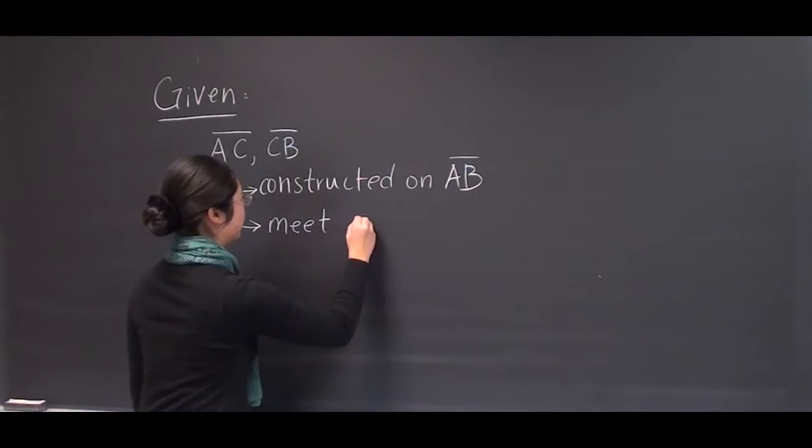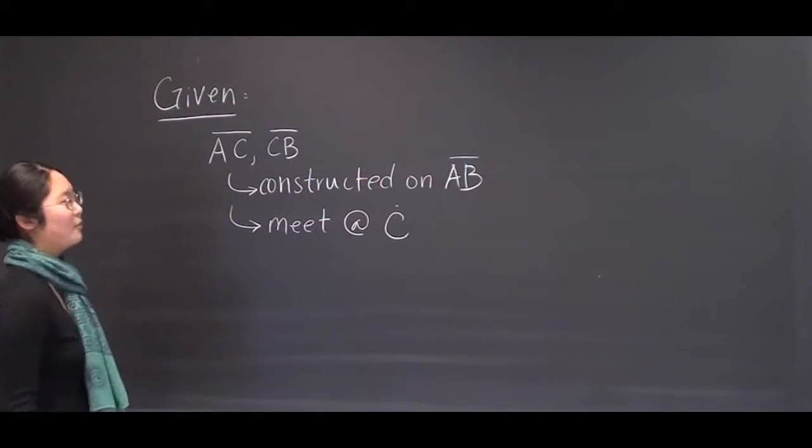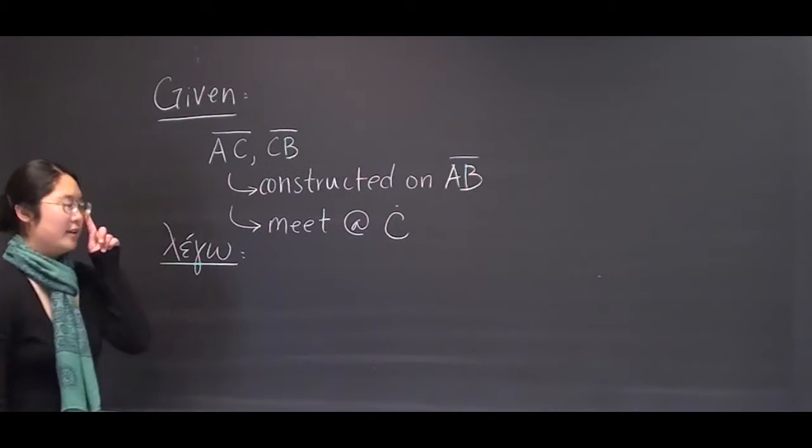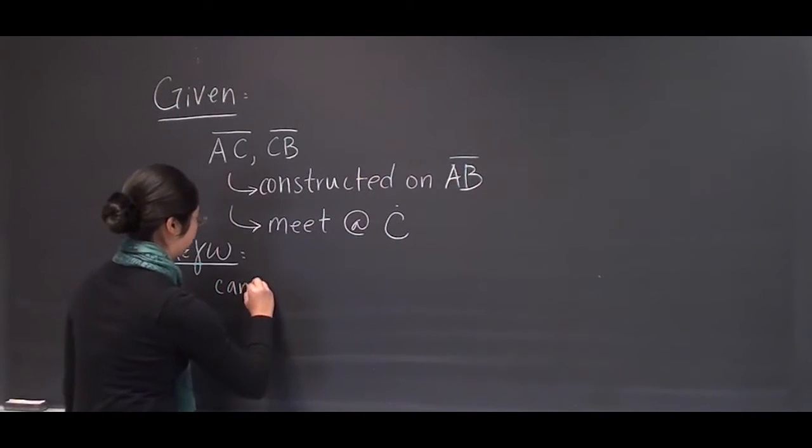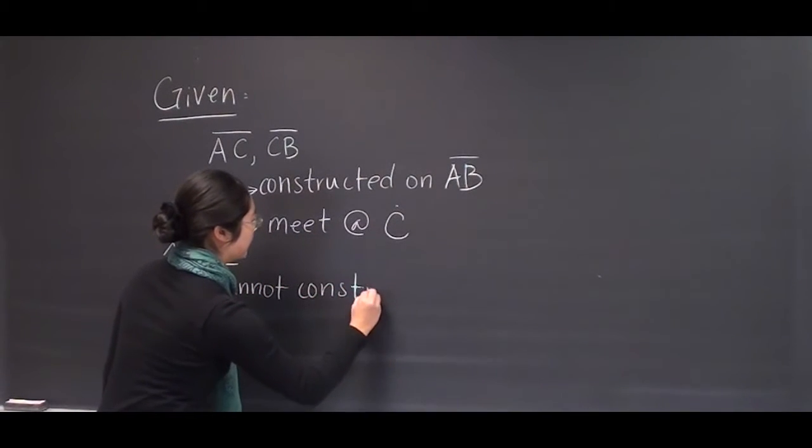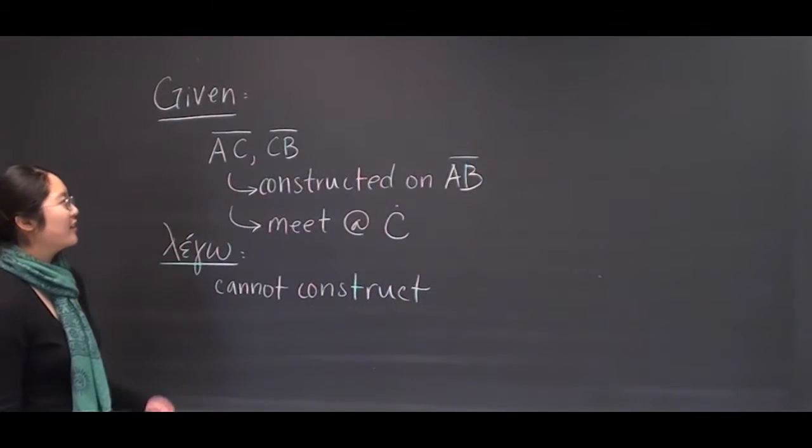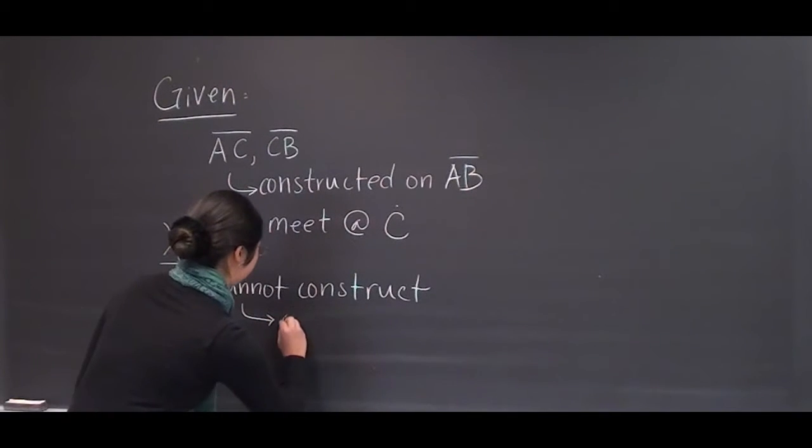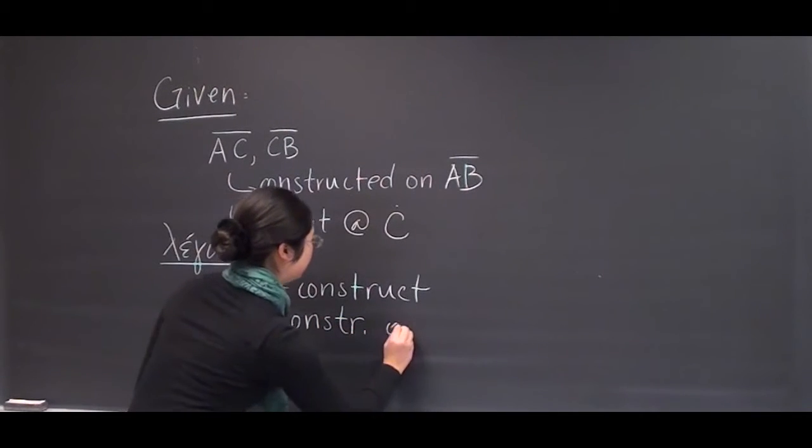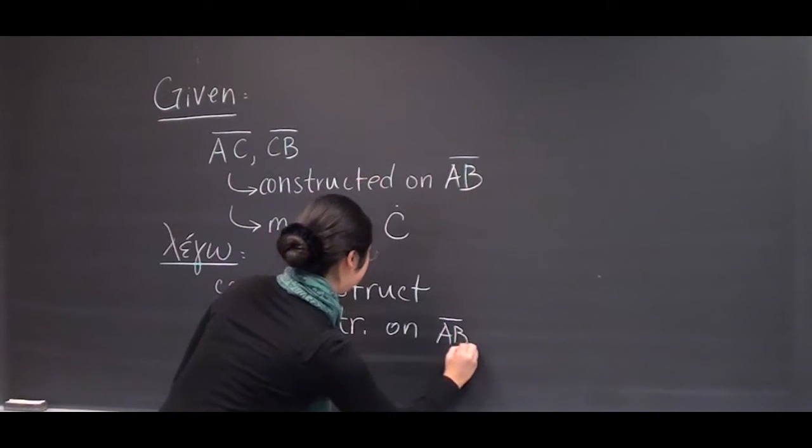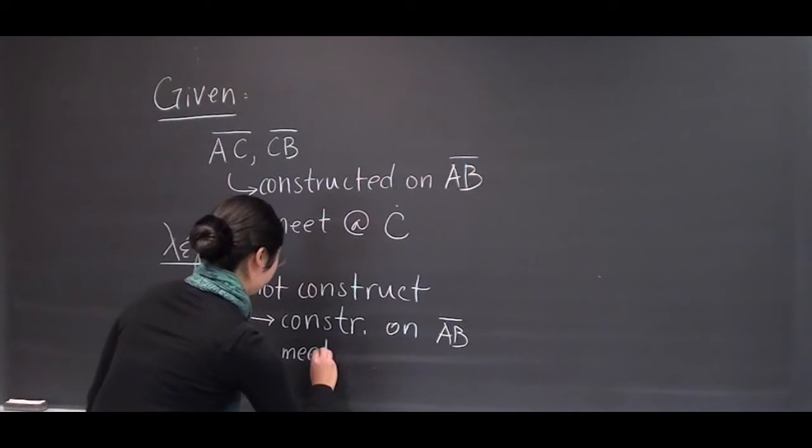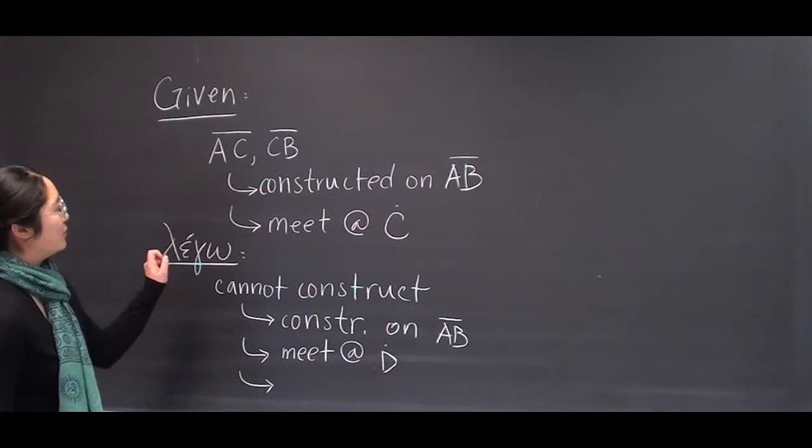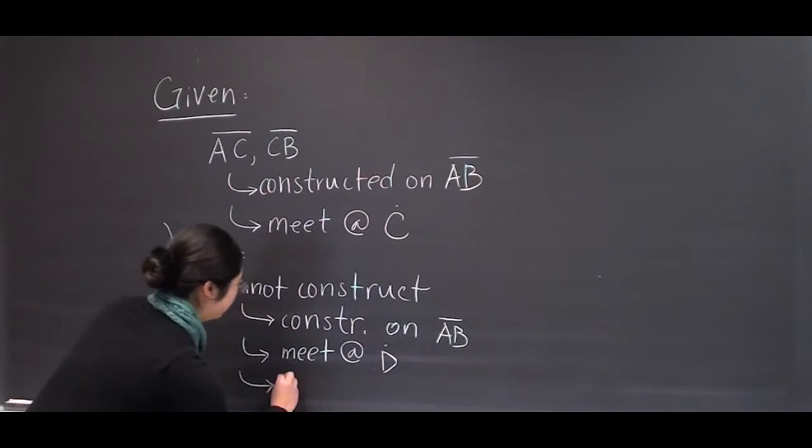we will prove that you cannot construct two other straight lines on the same line AB that meet at another point D, and that are equal to the given two lines AC, CB.